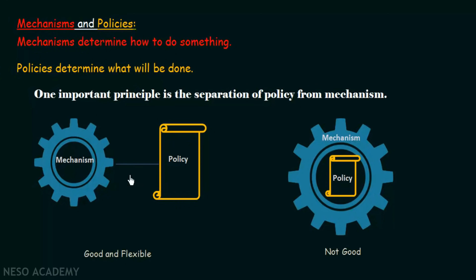So a change in policy should not affect the mechanism of your operating system. As an OS example, consider resource allocation: a process needs a resource, requests it, and it must be allocated. How that resource will be allocated to the process — that is your mechanism. The policy determines what will be done — whether to allocate the resource to that process or not.